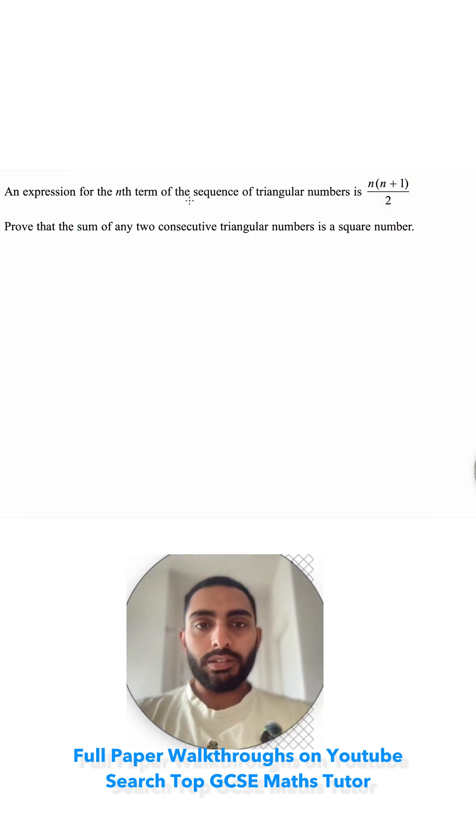Question 13: an expression for the nth term of a sequence of triangular numbers is n(n+1)/2. Prove that the sum of any two consecutive triangular numbers is a square number.